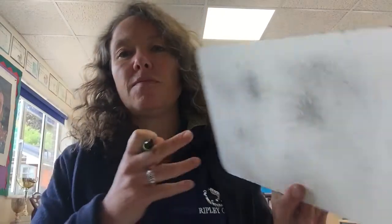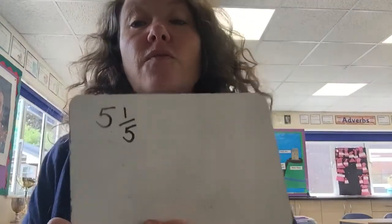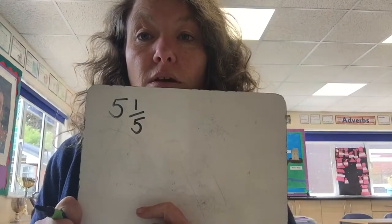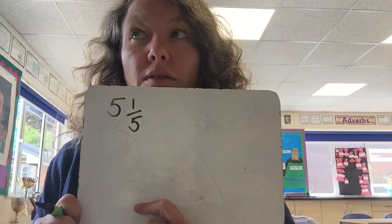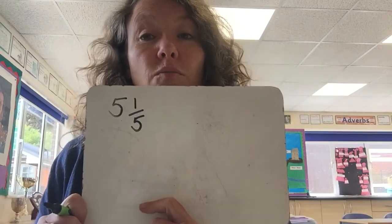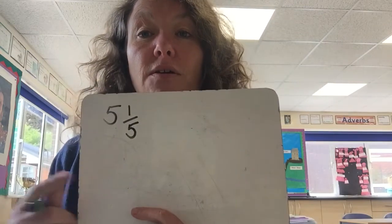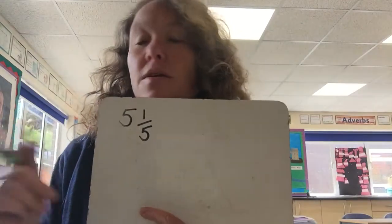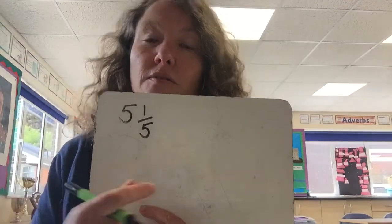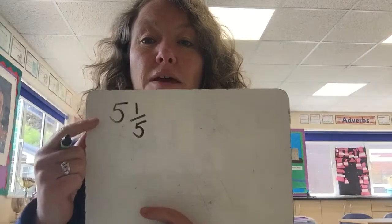Now we're going to go back the other way. If I give you a mixed number, we need to convert this into an improper fraction. When we were going the other way, we were dividing, so this time we're going to multiply — we're doing the inverse, the opposite. Remember, the inverse of dividing is multiplying.